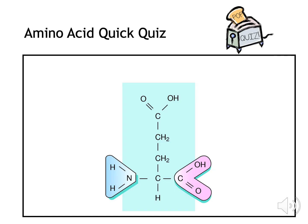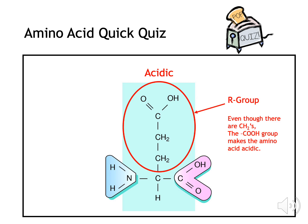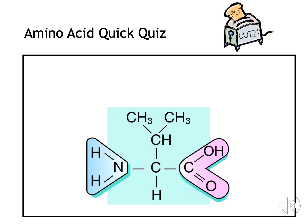Can you identify which type of amino acid this is? Well done if you got this correct — it is an acidic amino acid. Even though there are carbons and hydrogens in the R-group, the carboxyl group makes the amino acid acidic.